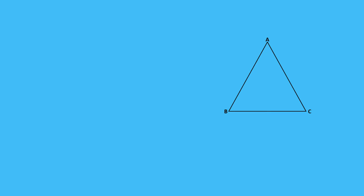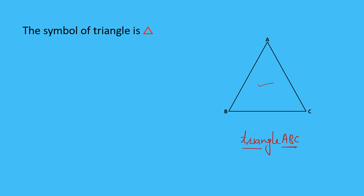Now let's talk about how to write the name of a triangle. Instead of writing the full word 'triangle,' we can use the triangle symbol — a small triangle shape. So triangle ABC can be written as △ABC. The name should be cyclic. We can write △ABC or △ACB.